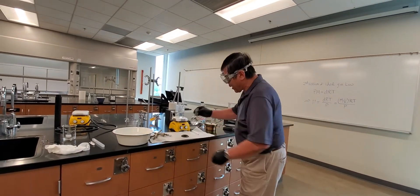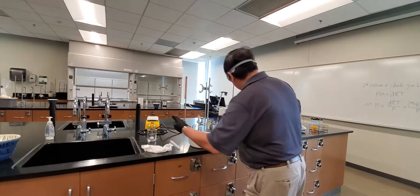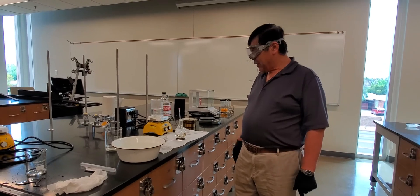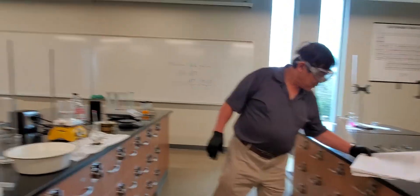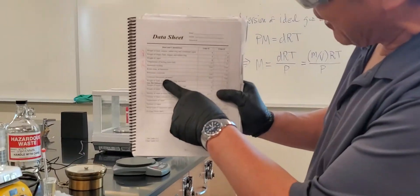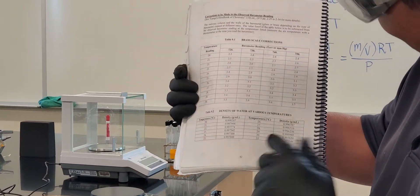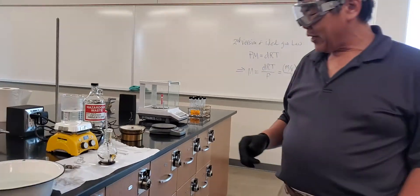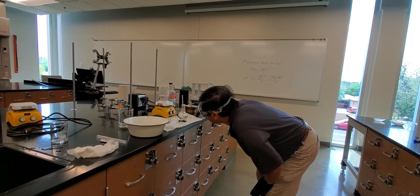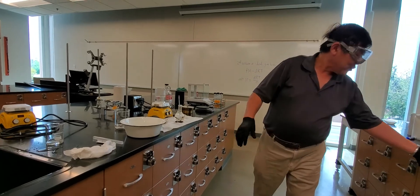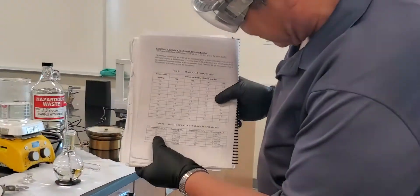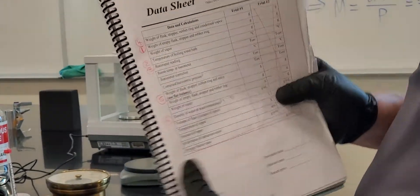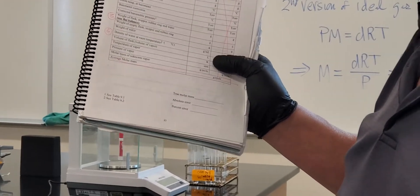The last step: get the thermometer, stick it into the water-filled flask, and wait about two or three minutes, then read the temperature. That's the fifth measurement. For the sixth number — the density of water — look it up in the table using the temperature you just read. In this case it reads 22 degrees Celsius, giving a density of 0.997744. Once you have all six numbers, you're done!